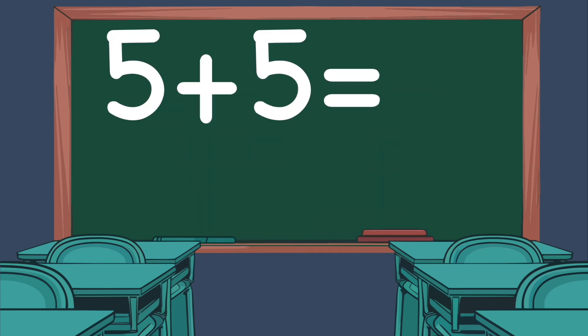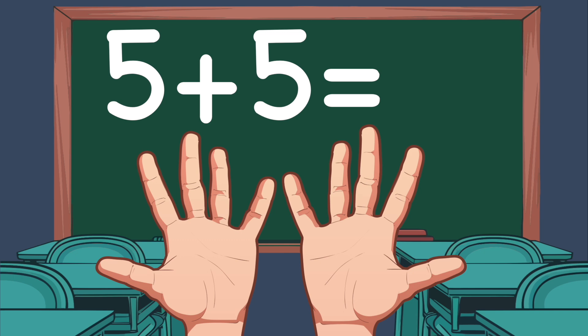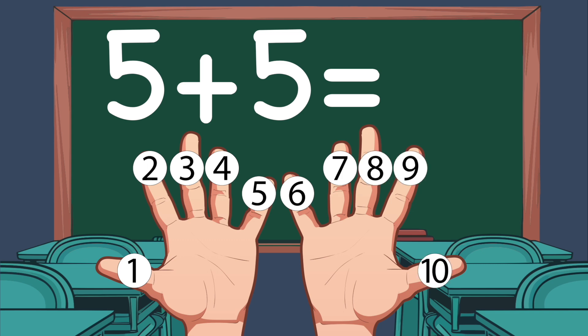Now let's do 5 plus 5. On our left hand, we show 5 fingers. And on our right hand, we show 5 fingers too. Now let's count the total number: 1, 2, 3, 4, 5, 6, 7, 8, 9, 10. So 5 plus 5 equals 10.